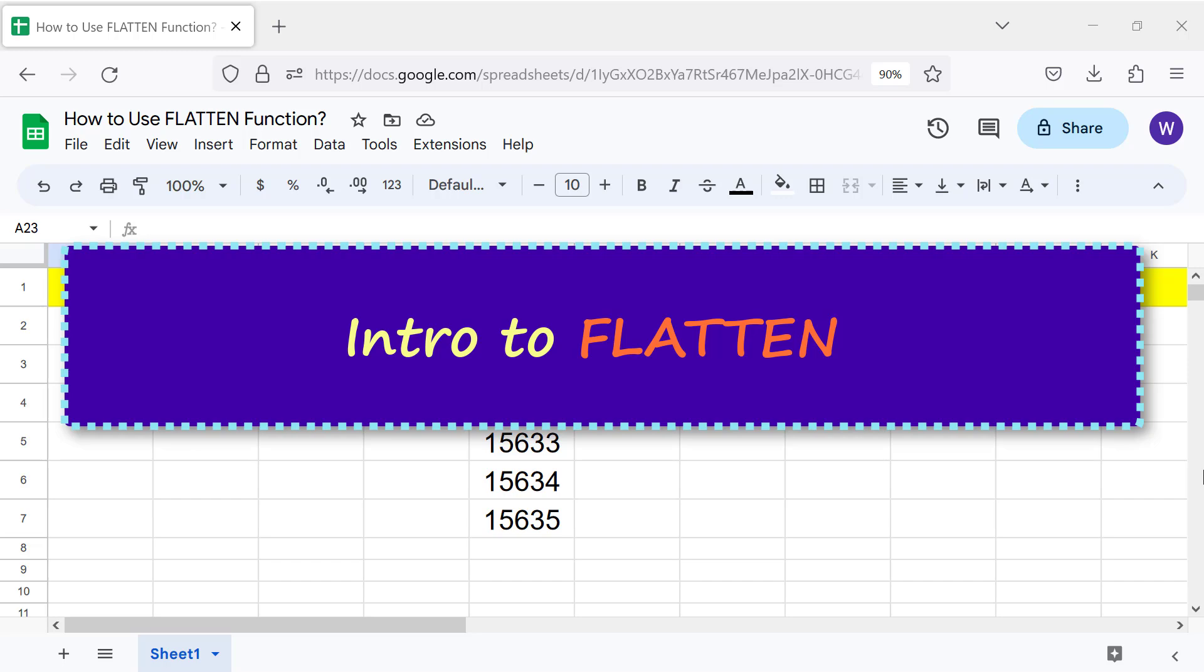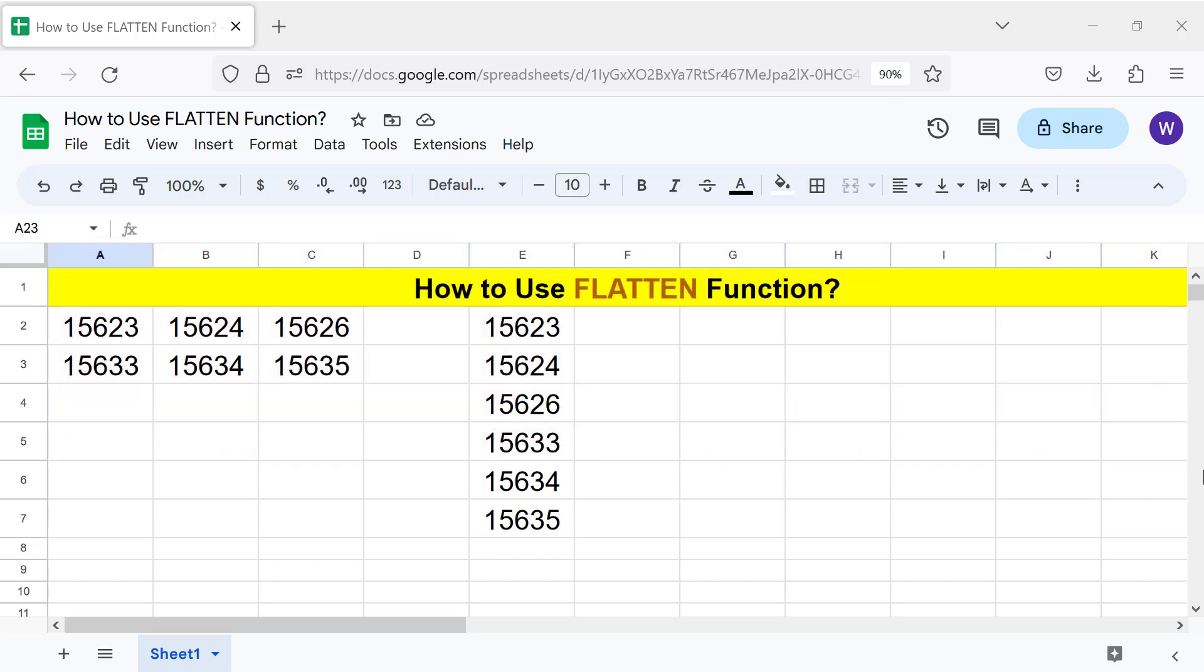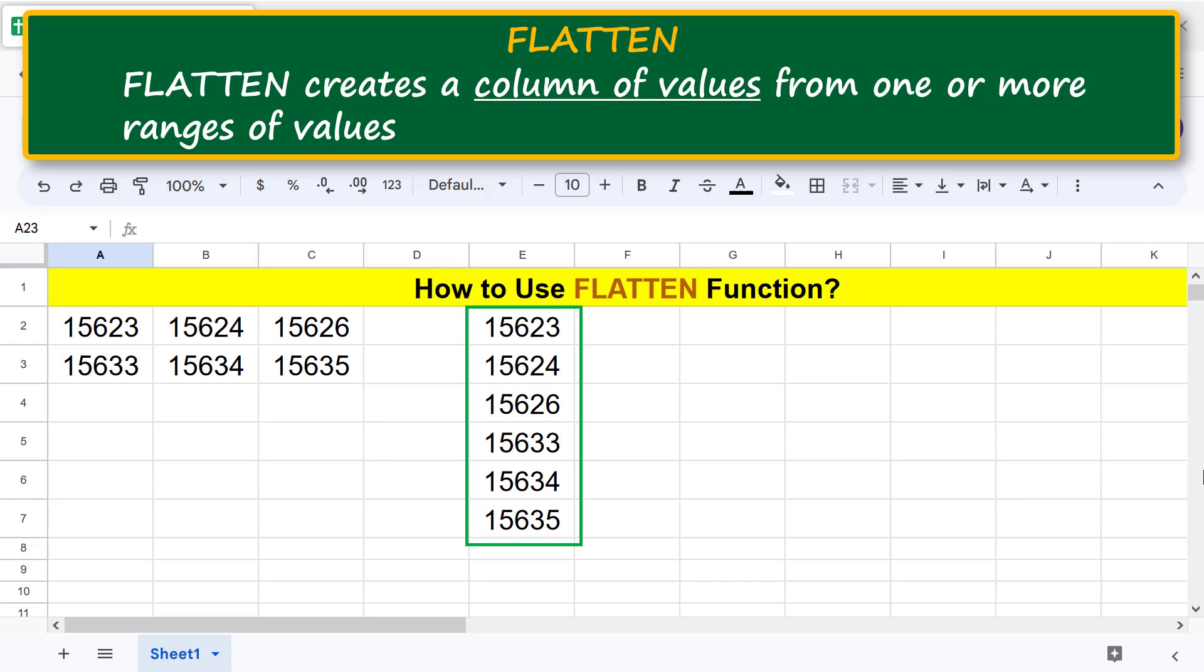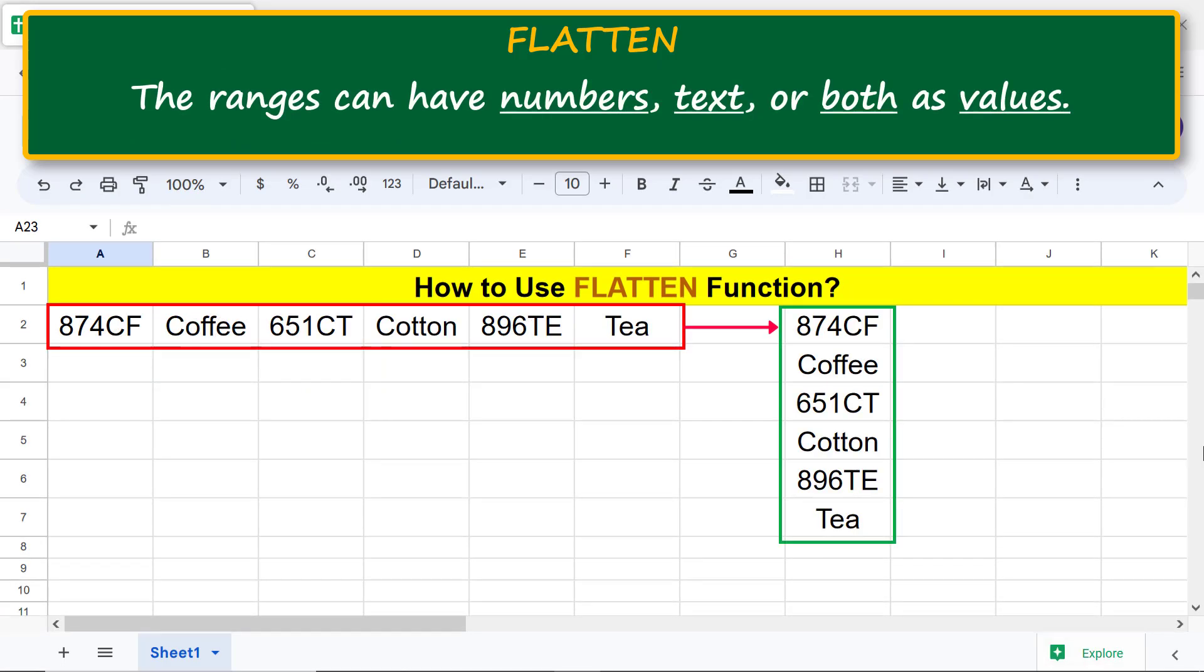Intro to Flatten: Flatten creates a column of values from one or more ranges of values. The ranges can have numbers, text, or both as values.